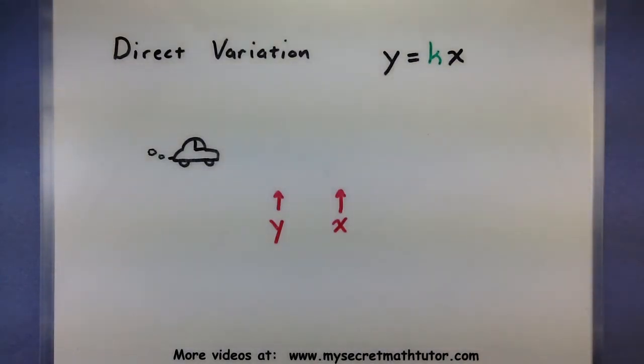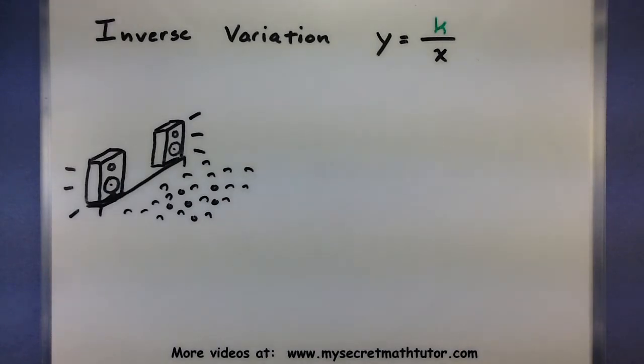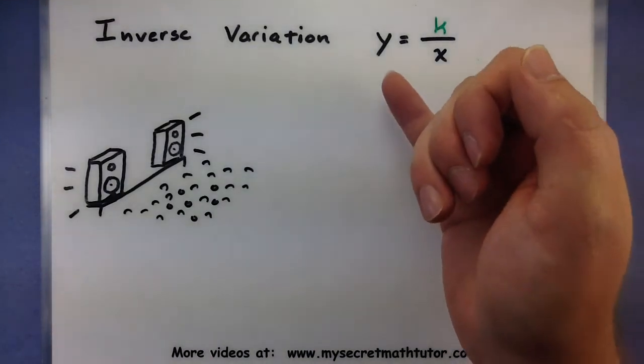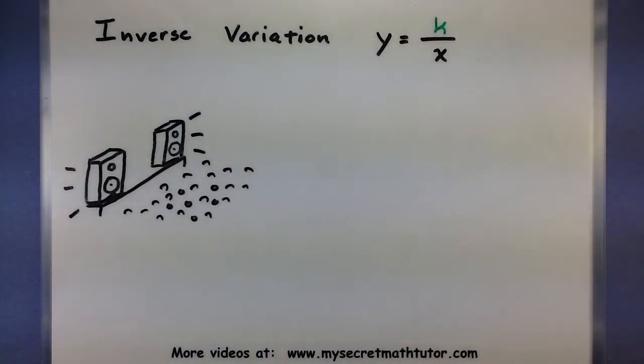Alright, let's do another one. In inverse variation, now we want to make sure that the variables are actually moving in two different directions. So maybe as y gets larger, we want x to get smaller. Or as y gets smaller, we want x to get larger.